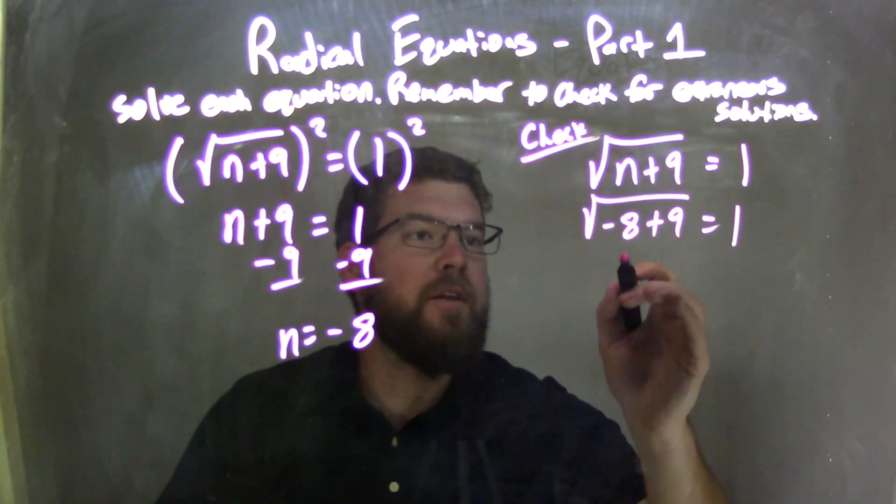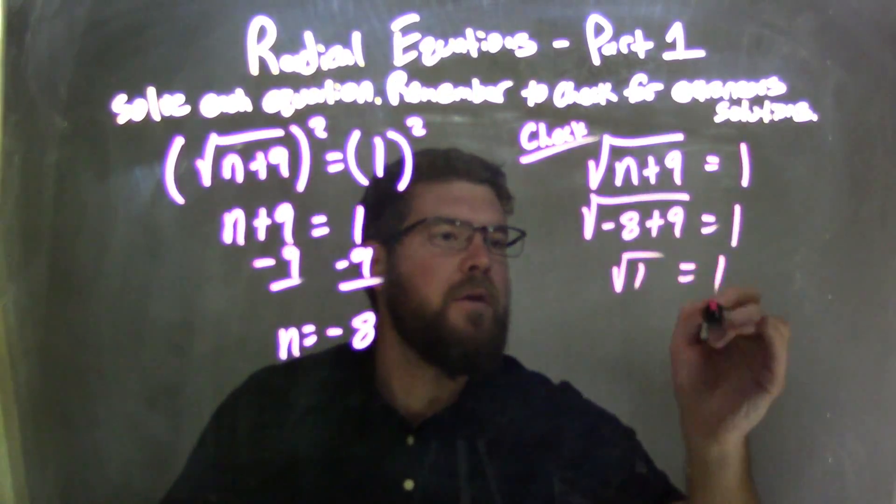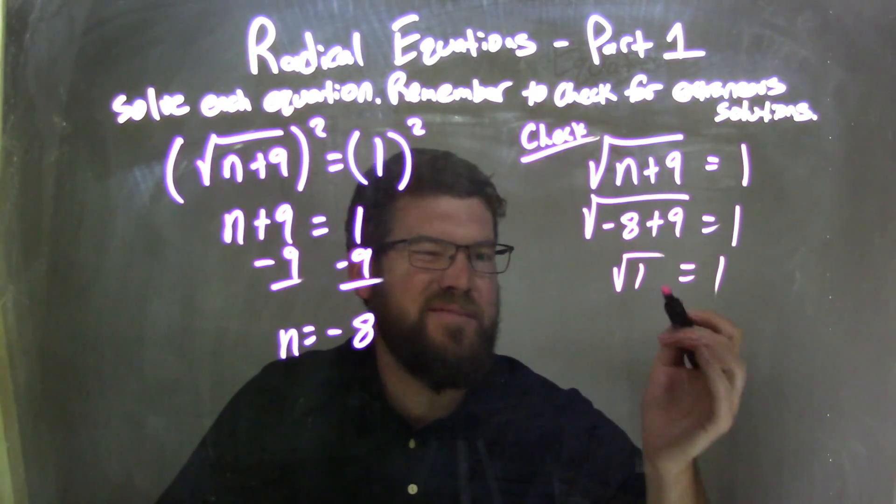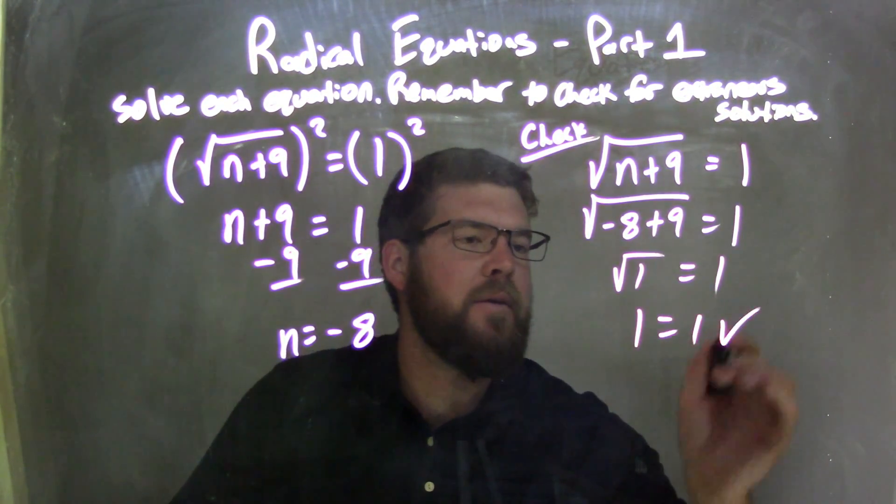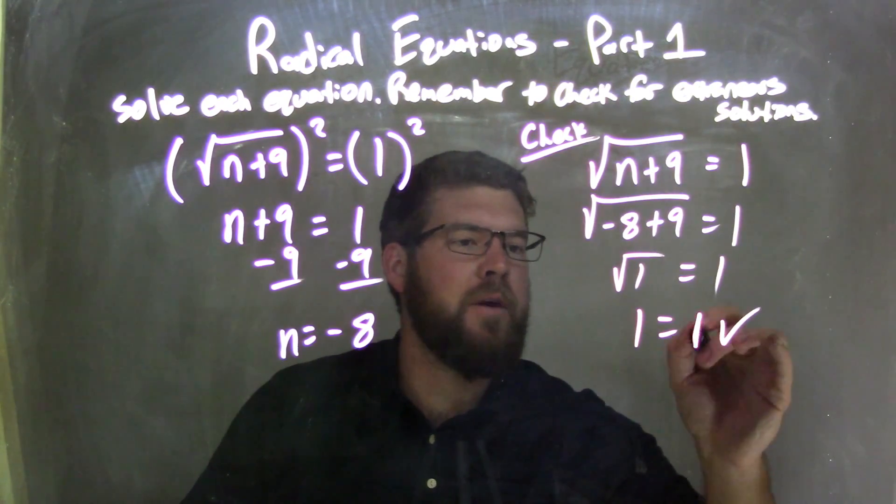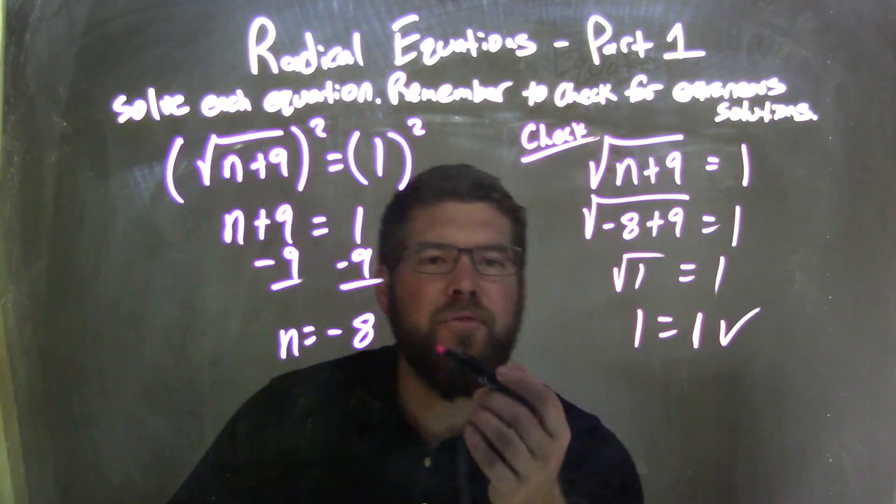Simplify: negative 8 plus 9 is 1. Square root of 1 equals 1. Square root of 1 is just 1, so 1 does equal 1, and we're good. That's true. Fantastic. So n equals negative 8 is the true answer.